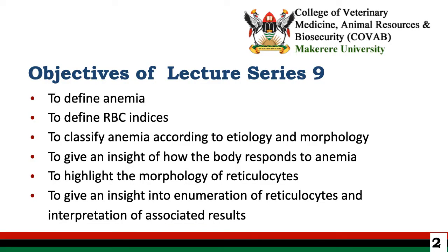The objectives of lecture series 9 are: 1. Define anemia. 2. Define red blood cell indices. 3. Classify anemia according to etiology and morphology. 4. Give an insight of how the body responds to anemia. 5. Highlight morphology of reticulocytes. 6. Give an insight into the enumeration of reticulocytes and interpretation of these associated results.